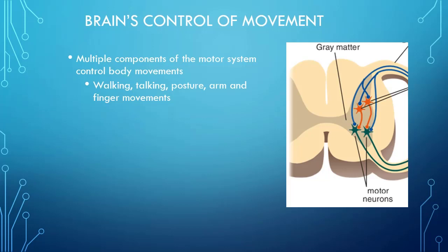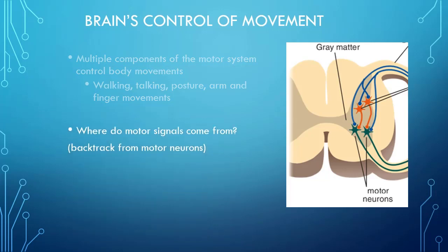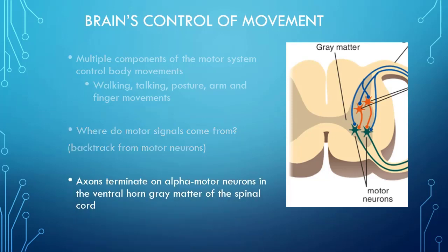As a reminder of the big picture from last class, we were focusing down at the level of the muscle — how we use a signal coming down through the spinal cord and through the neuromuscular junction to cause muscles to move. These movements can control walking, talking, posture, and so on. When thinking about where motor signals are coming from, just backtrack from the motor neurons mentally. Everything we're talking about today fits within this context, and all signals come down to alpha motor neurons in the ventral horn gray matter of the spinal cord.